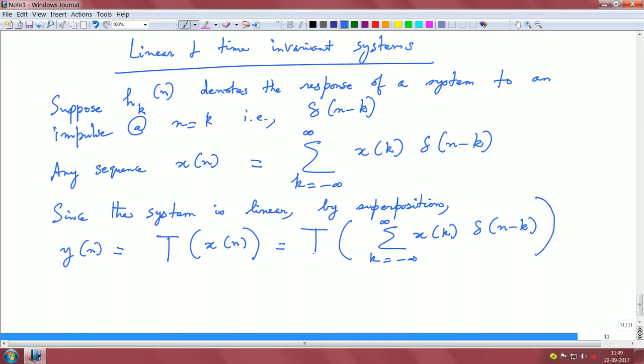Since T is linear, we can say this is summation k equals minus infinity to plus infinity, x(k), and you bring in the map T here, and T of delta(n minus k). The validation to this step is linearity. You may call it linearity from a systems perspective; if you are a mathematician you may say this is a linear map.